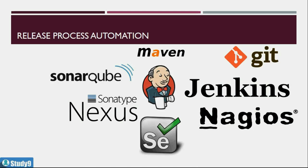We will cover everything from installation to configuration in this course. We will use Maven as a build tool and SonarQube as the code quality analysis tool. When the code is converted into a verified package, we will do version controlling using SonarType Nexus. Using Jenkins, we will deploy a sample Java application project into a Tomcat server. Once the application is running on Tomcat, we will do automated testing — Jenkins will call Python code, Python will call Selenium test cases, and Selenium will run against the Java application deployed on Tomcat, validated against the test cases.